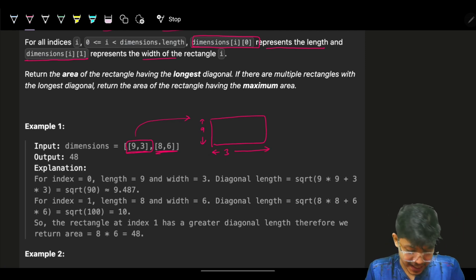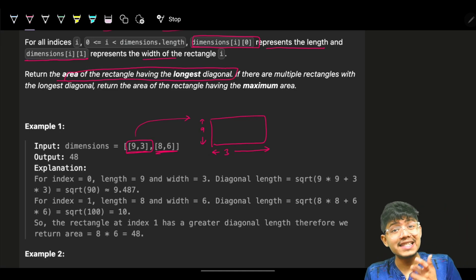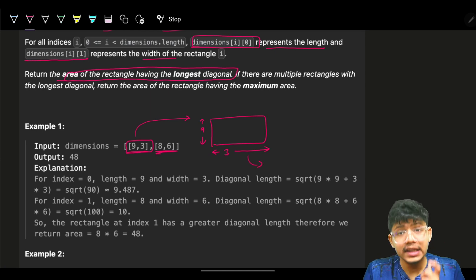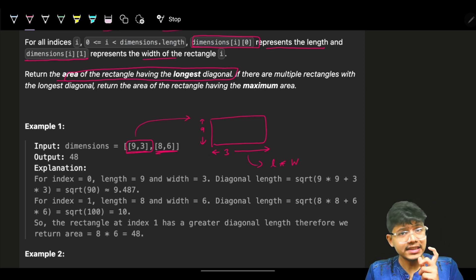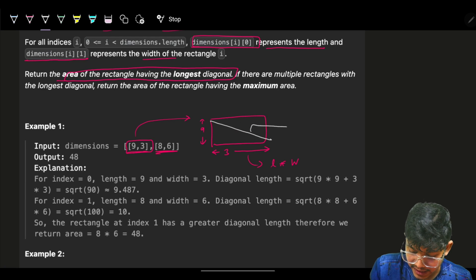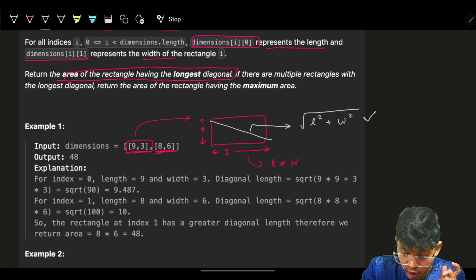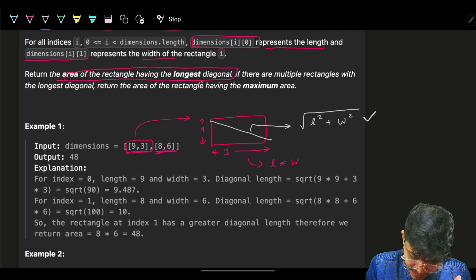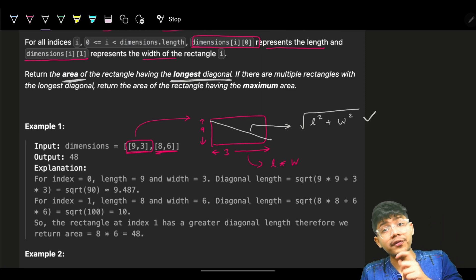What the problem is saying next is: return the area of the rectangle having the longest diagonal. The area of the rectangle is nothing but length into width. The diagonal of a rectangle is nothing but the square root of length squared plus width squared. And we just want to find the maximum diagonal.